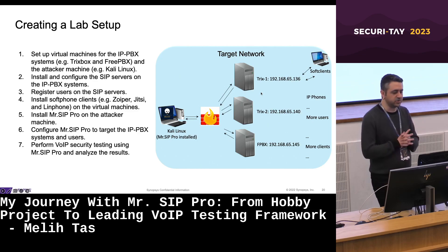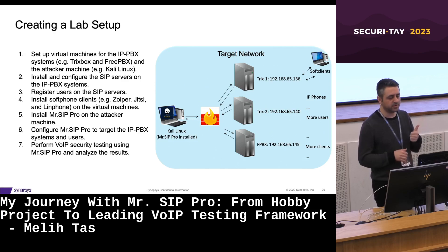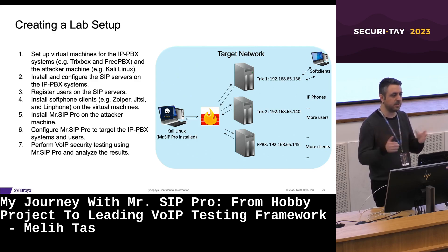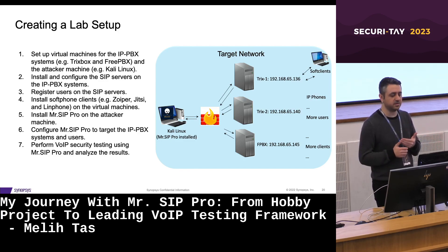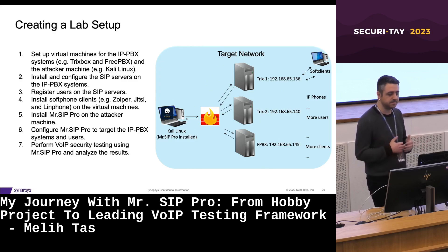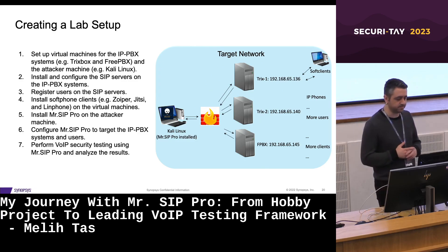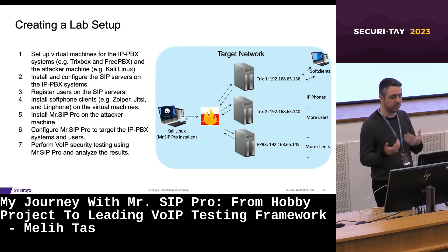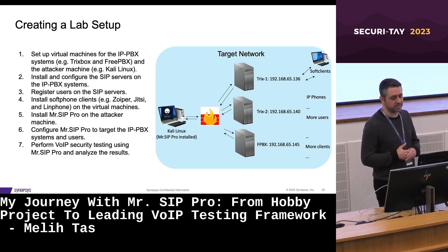To create a basic virtual Voice over IP security laboratory, we can follow these steps: set up virtual machines for the IP-PBX systems such as Trixbox or FreePBX, and attacker machines such as Kali Linux. Install and configure the SIP servers on the IP-PBX systems, register users on the SIP servers, install soft clients such as Zoiper, Jitsi and Linphone on virtual machines, and install Mr. SIP Pro on the attacker machine. Configure Mr. SIP Pro to target the IP-PBX systems and users, then perform Voice over IP security testing and analyze the results. This setup allows for safe and controlled testing without risking a live production environment.